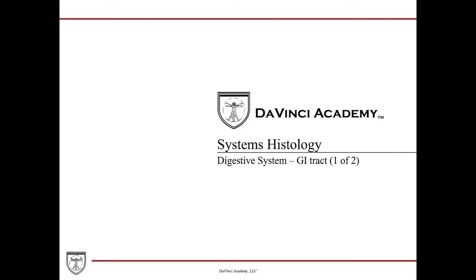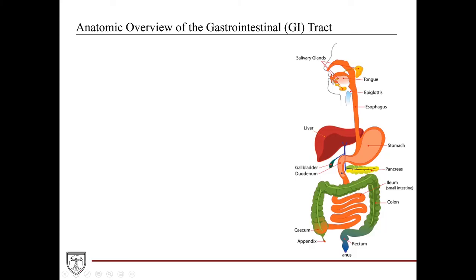In the first of the two GI tract lectures, we'll discuss some general features of the GI tract organization and look at the characteristic histology of the esophagus and the stomach. Anatomically speaking, the gastrointestinal tract, or the GI tract, is a really long muscular tube that runs throughout our body.